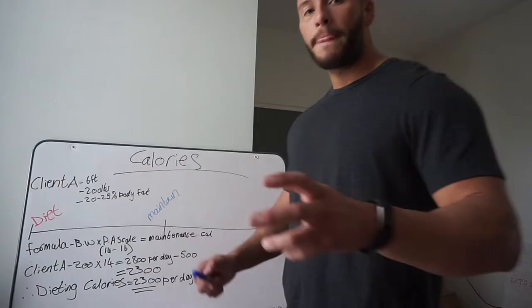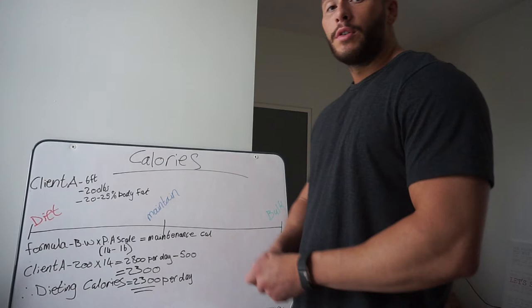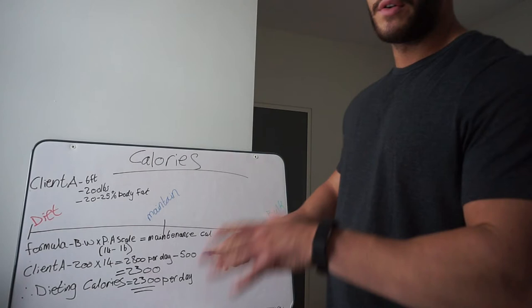Okay, so we're going to start off with calories. We're going to use Client A as an example here. So Client A is six foot, 200 pounds, and he's between 20 and 25 percent body fat. We're going to cover dieting calories, maintenance calories, and bulking calories. We're not going to worry about bulking because that's another topic for another video.